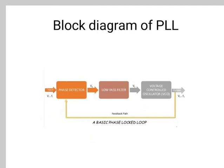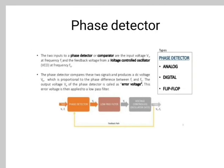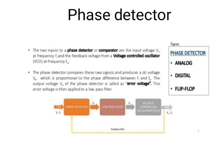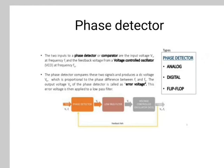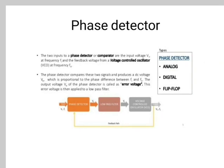The first block is the phase detector. The two inputs to a phase detector or comparator are: the input voltage V at a given frequency, and the feedback voltage from the voltage controlled oscillator at its frequency. The phase detector compares the two signals and produces a DC voltage VE which is proportional to the phase difference between Fi (input frequency) and Fo (VCO output frequency). The output voltage VE of the phase detector is called the error voltage. This error is then applied to the low-pass filter. There are three types of phase detector: analog, digital, and flip-flop.